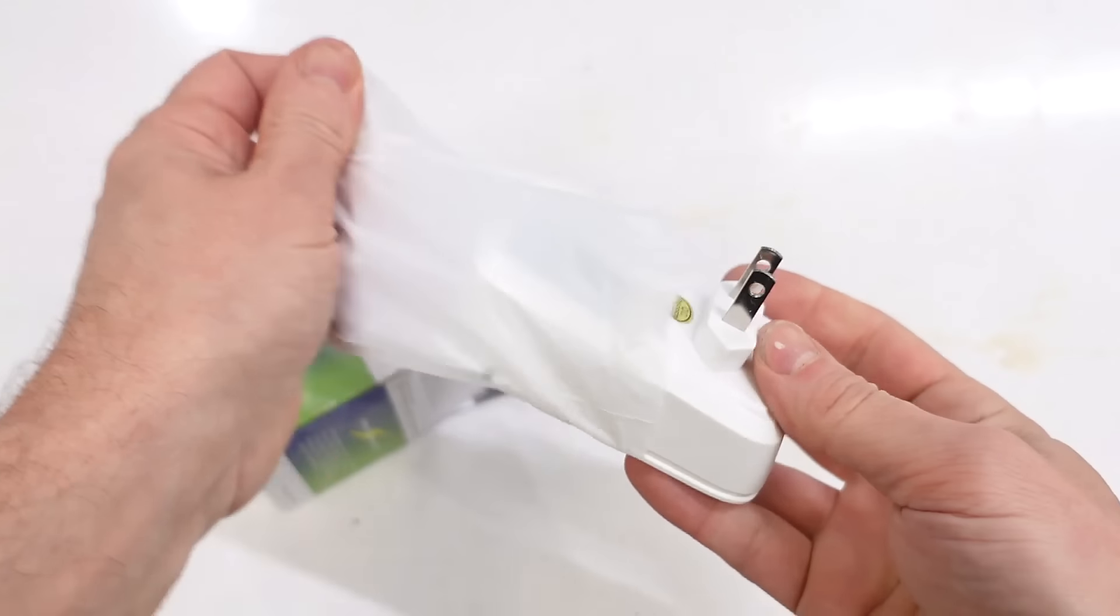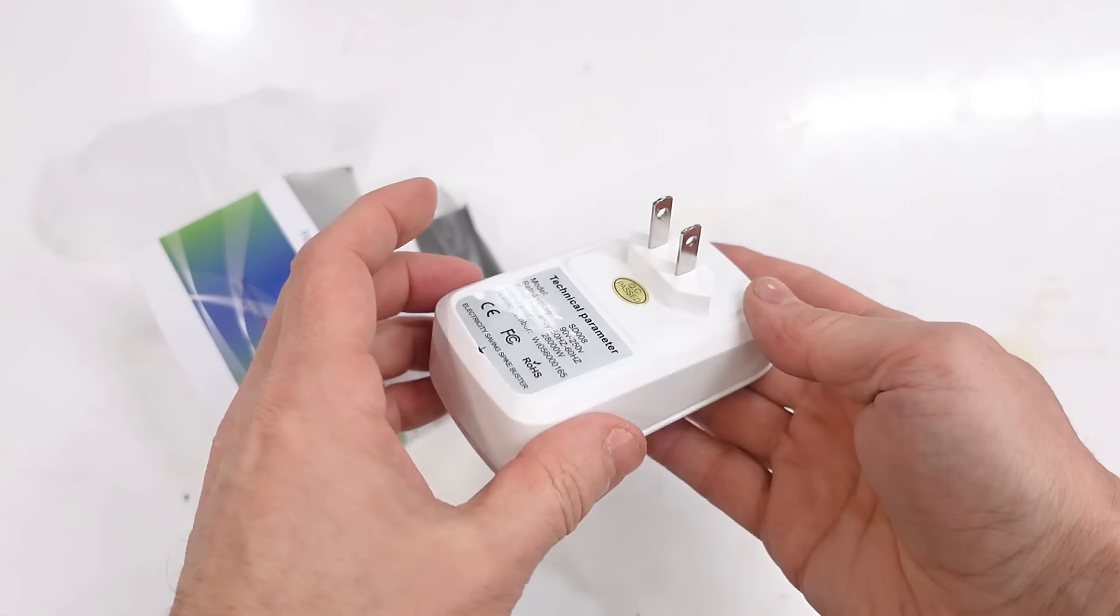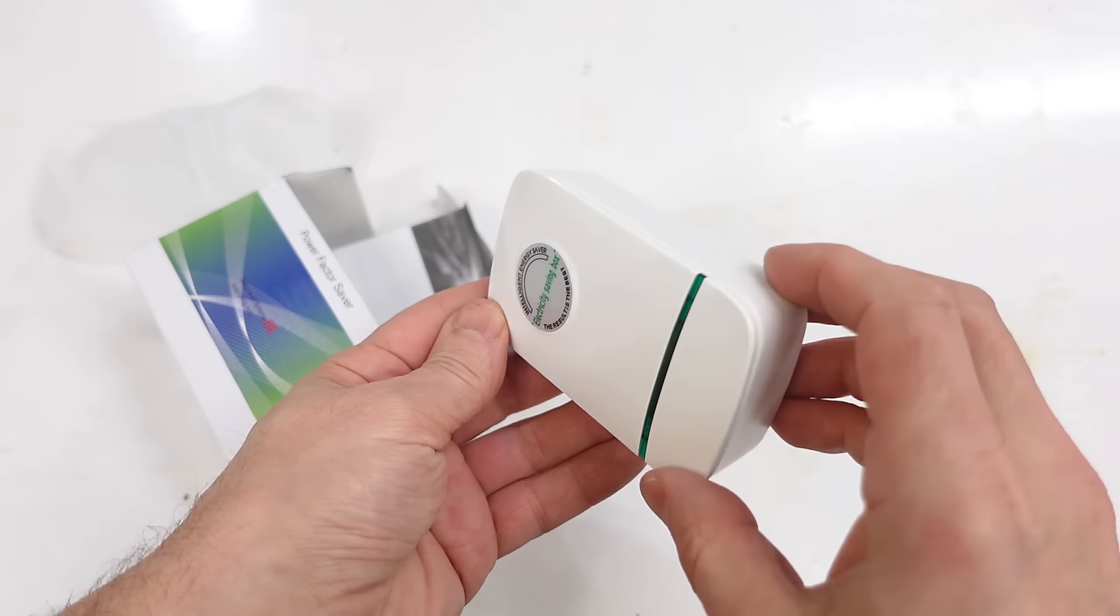You can buy a lot of these power saver devices on Amazon. This is the Power Factor Saver. So you just plug this thing in the wall and it'll somehow magically save energy.